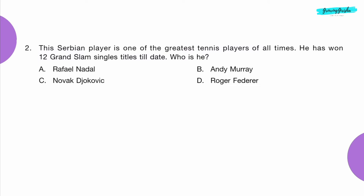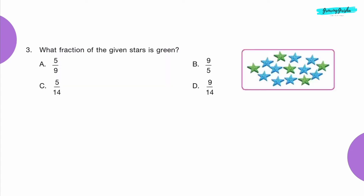Question 2: This Serbian player is one of the greatest tennis players of all time. He has won 12 Grand Slam singles titles till date. Who is he? Option C: Novak Djokovic.